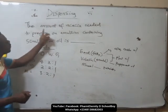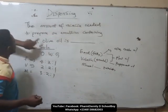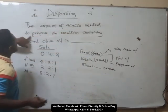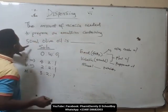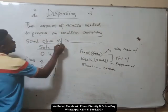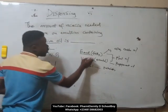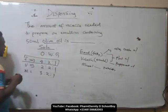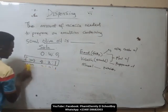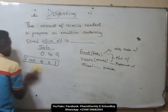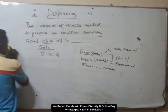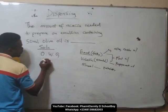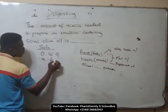Now let's go back to the question. The amount of acacia gum needed to prepare an emulsion containing 50 ml olive oil. Olive oil is the oil here, which is a fixed oil. So we are using the fixed oil ratio: oil to water to gum is 4 to 2 to 1.